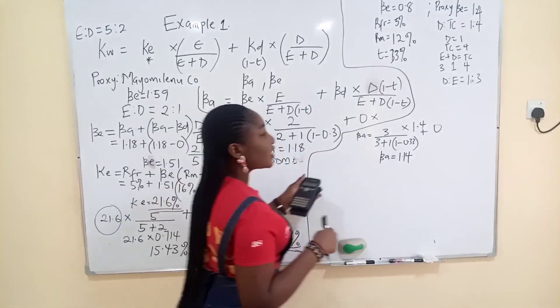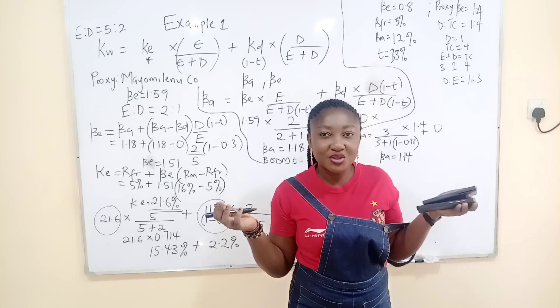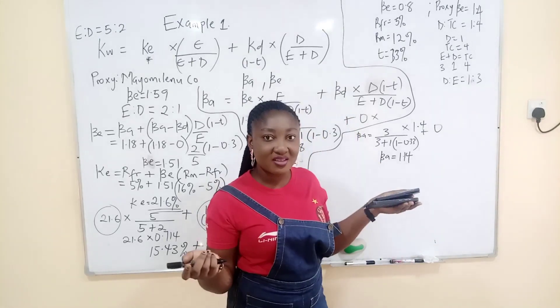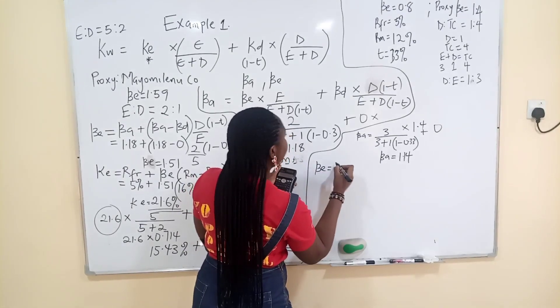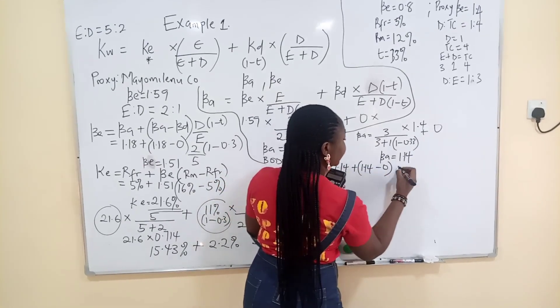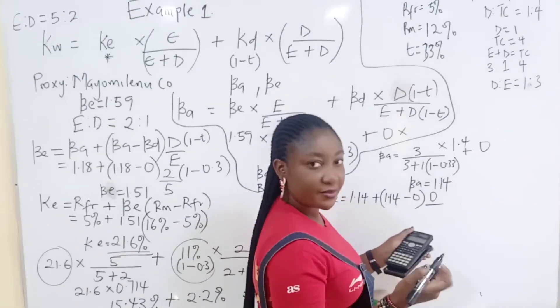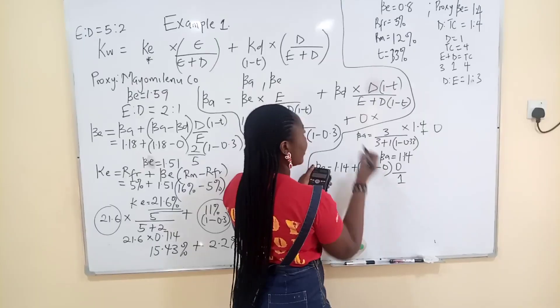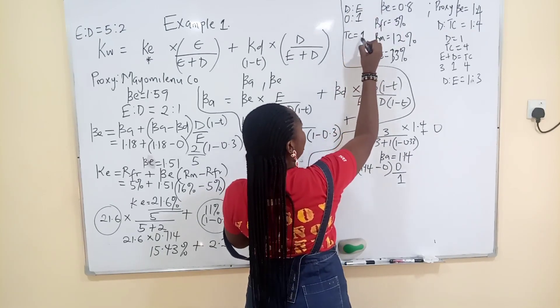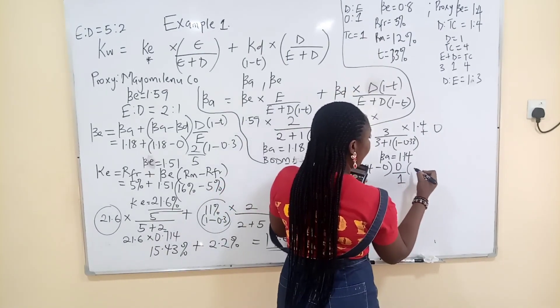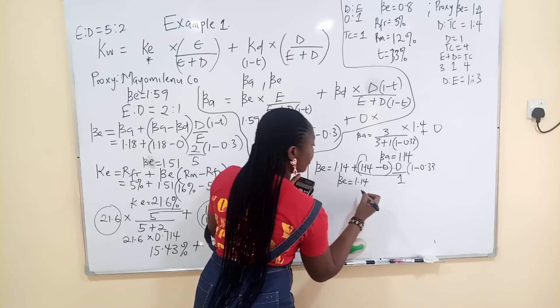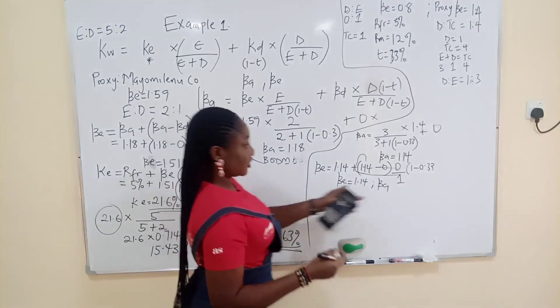Now do you need to regear? You don't need to regear because there's no debt element. The company is equity financed. So you think that this BA will be the BE. But let's try and regear. Let's say BE. Regarding BA, that's 1.14 plus 1.14 minus zero into D over E. D is what? Zero because there's no debt. So let's say BE will be 1.14. Does it make sense? Debt to equity, there's no debt so this one will be zero. Into 1 minus C, 0.33. This zero that is here has caused this whole thing. Definitely your BE is equal to 1.14, which is what? Your BA that you actually had here.